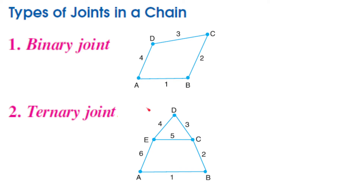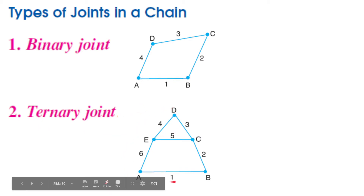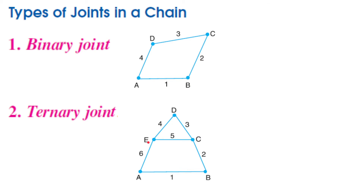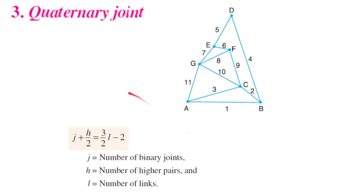For the tertiary case, there are six links, five joints, and no higher pairs. LHS equals RHS again, so this can be a kinematic chain or a constrained chain.